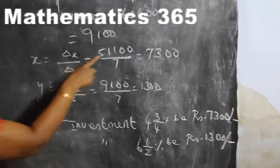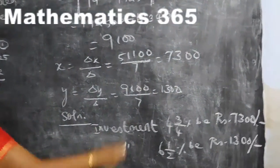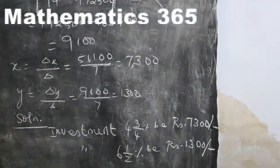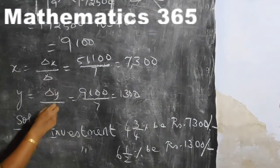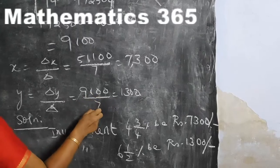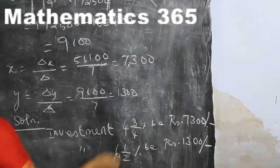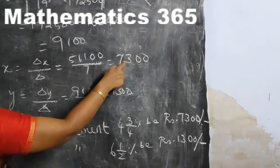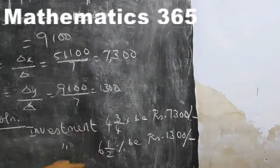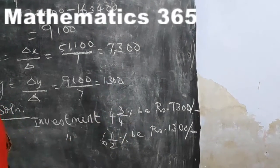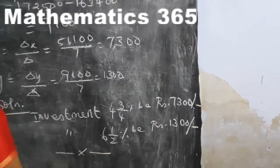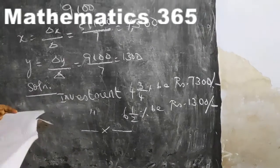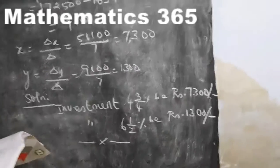Applying Cramer's rule: x equals Delta X divided by Delta, which is 51100 divided by 7, giving x equals 7300. Y equals Delta Y divided by Delta, which is 9100 divided by 7, giving y equals 1300. So the investment at 4¾% is Rs. 7300 and at 6½% is Rs. 1300.